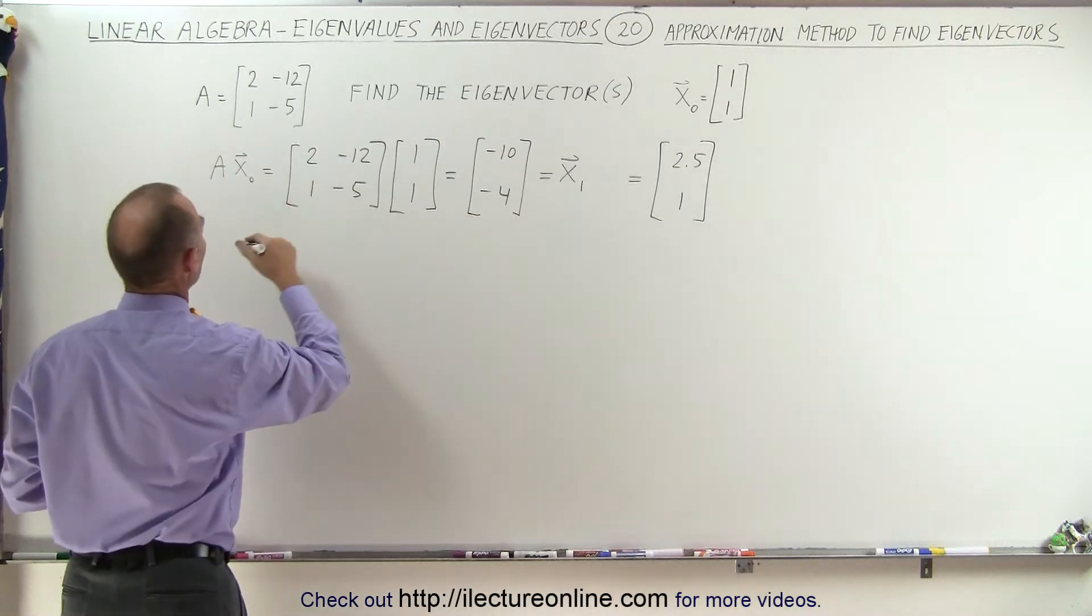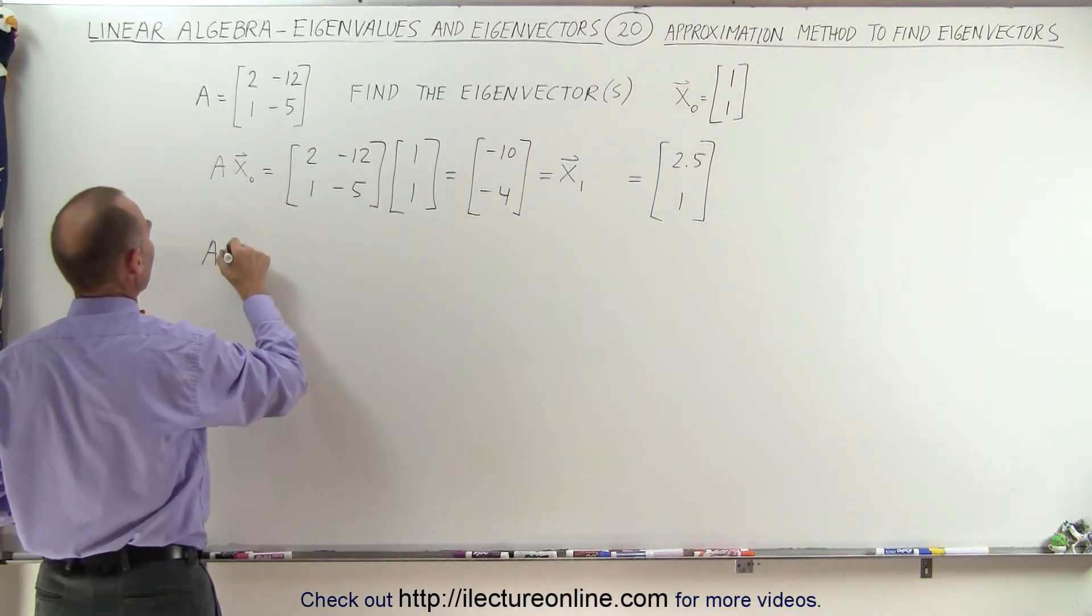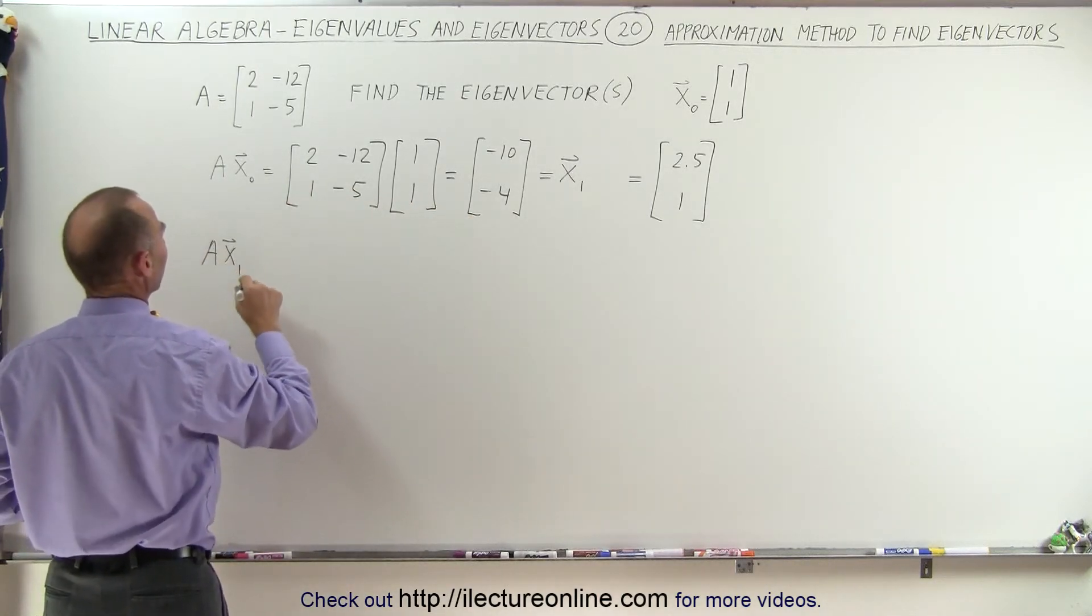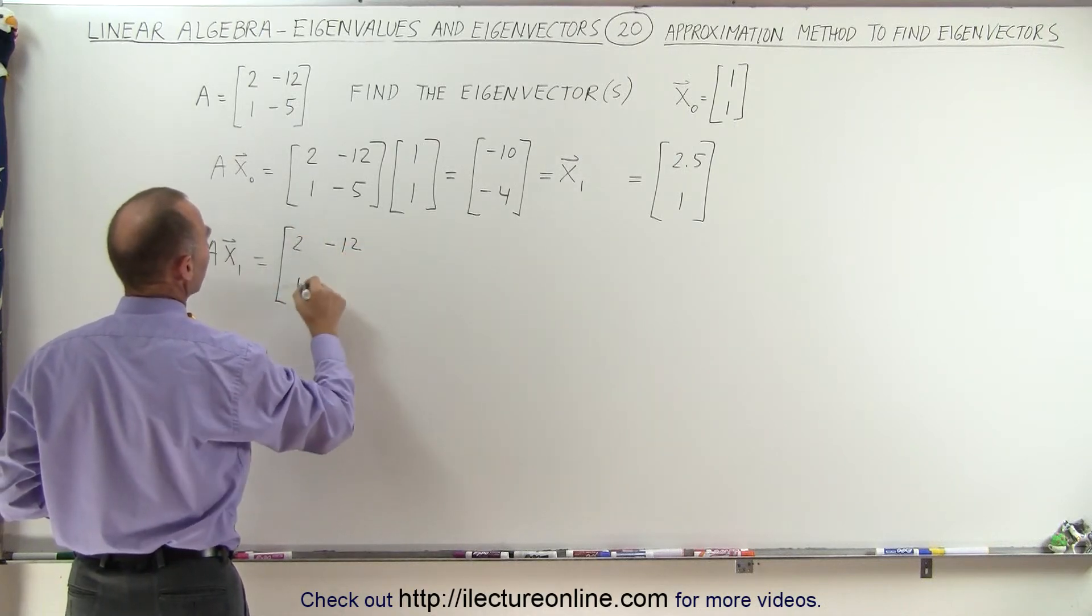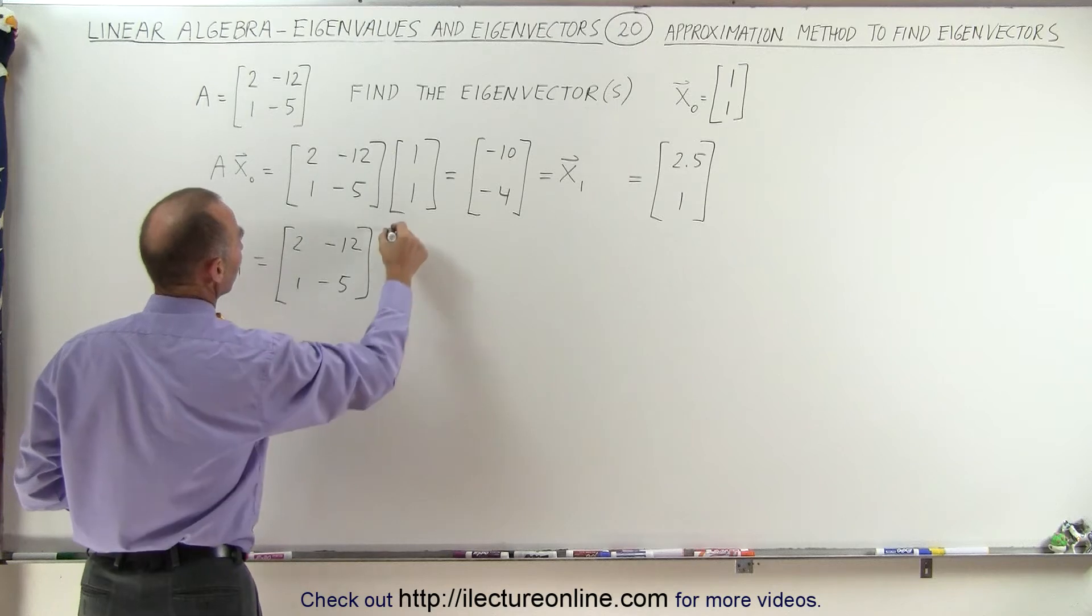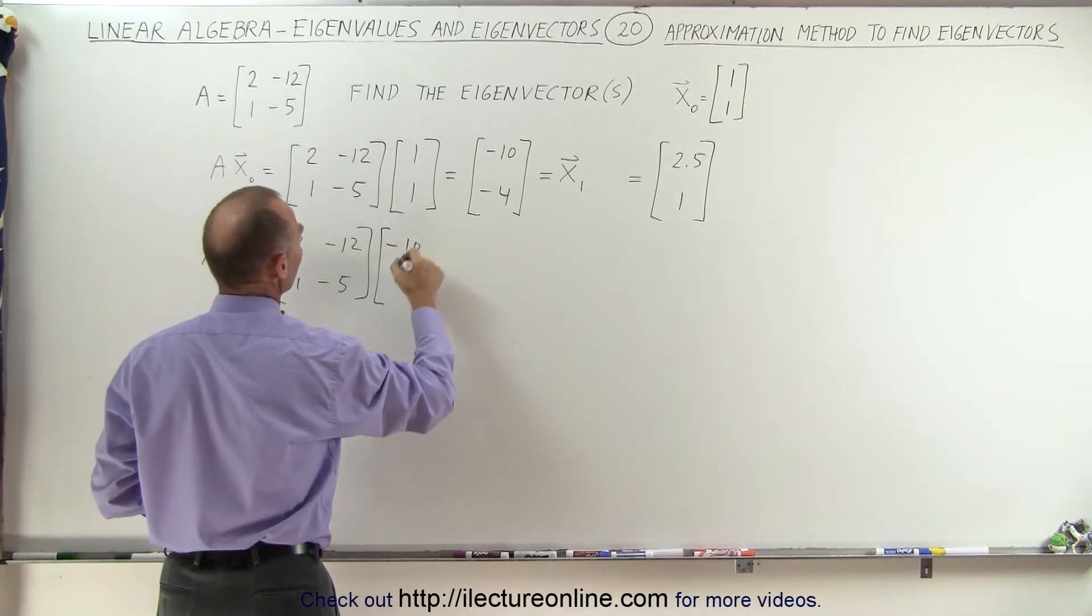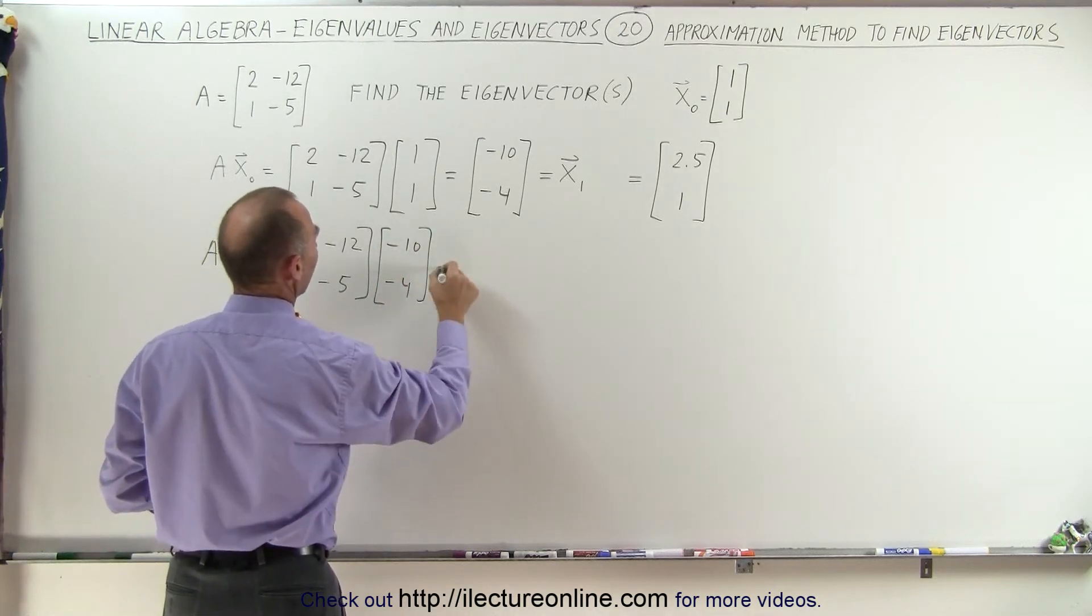All right, now let's plug this in here for our second multiplication, A times the next vector x sub 1, that would be equal to [2, -12; 1, -5] and the new vector which is [-10, -4]. And that equals,